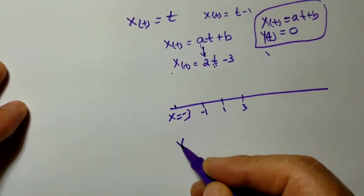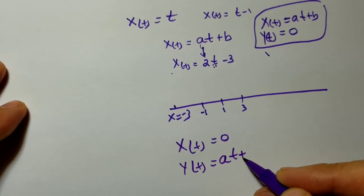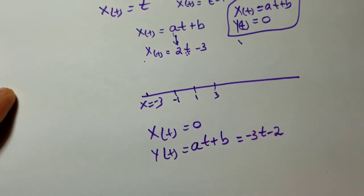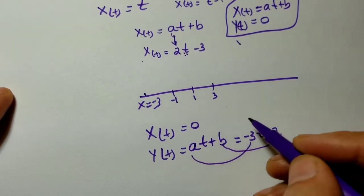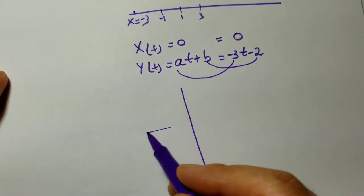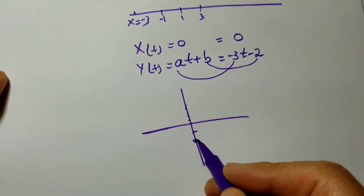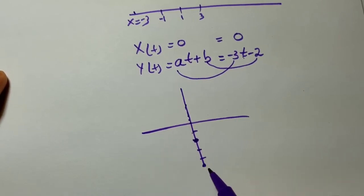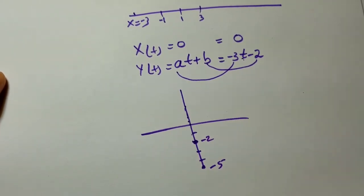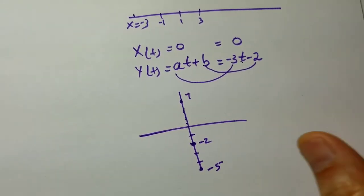What if we make x equal to 0, but y becomes at plus b? For example, y of t equals negative 3t minus 2, with x of t equal to 0. When x is always 0 and t is 0, you are at y equals negative 2. When t is 1, you are at negative 5. When t is negative 3, you get 9 minus 2 which equals 7. Therefore, this is called a vertical path.